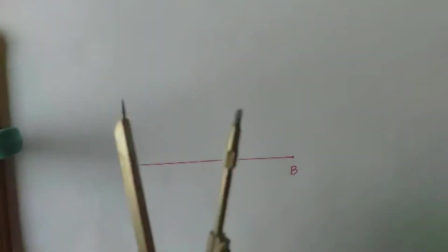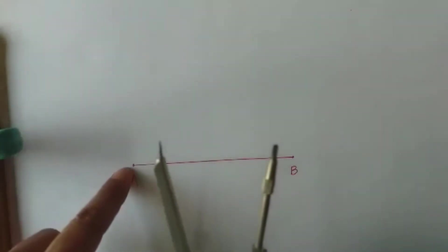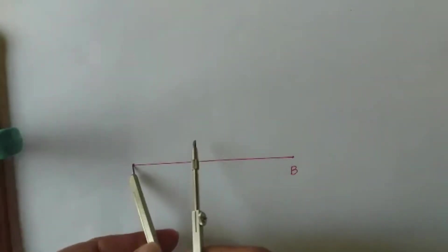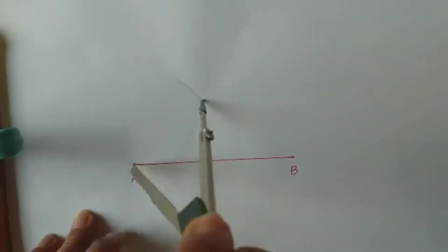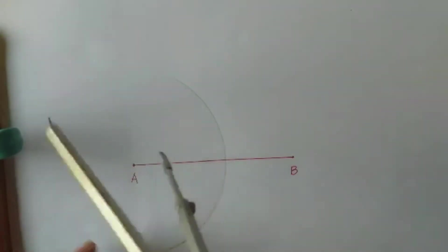Get your compass. Position the compass in such a way that the compass point will get point A, and then open the compass which is approximately two-thirds or more than half of segment AB. Draw an arc intersecting segment AB.